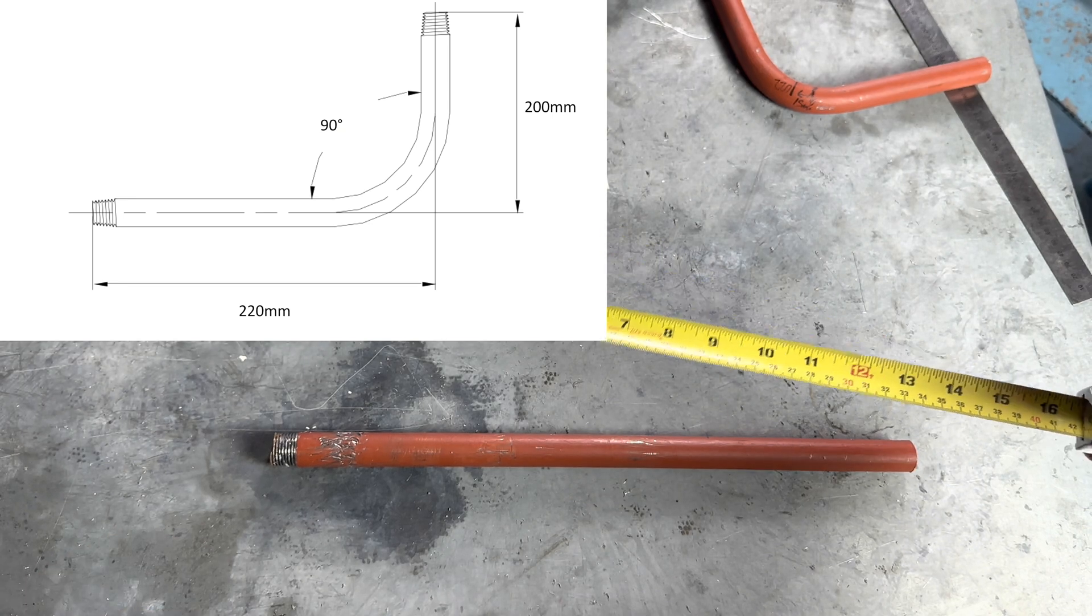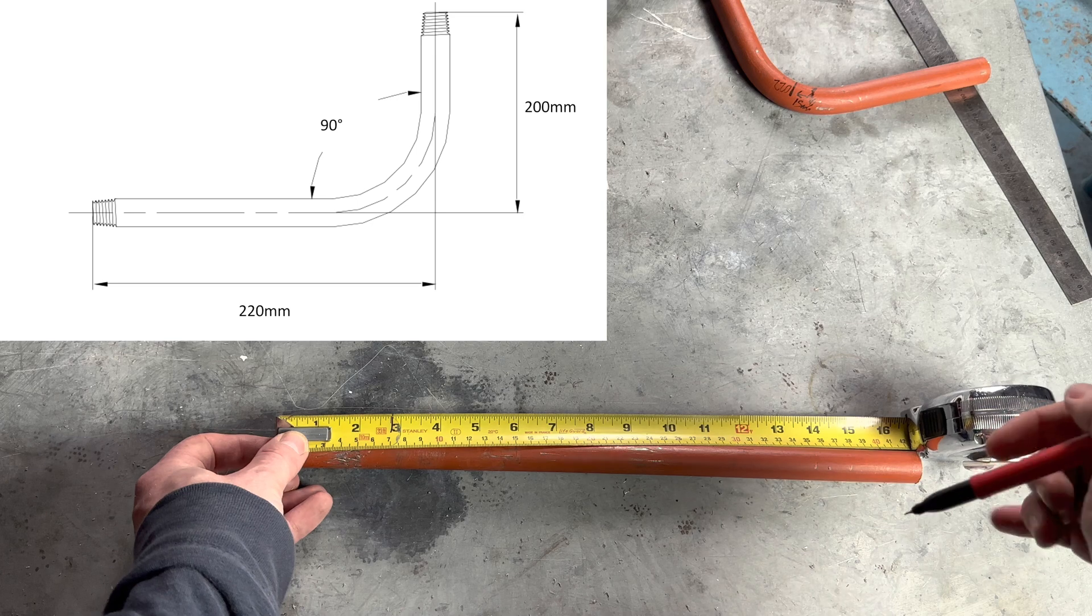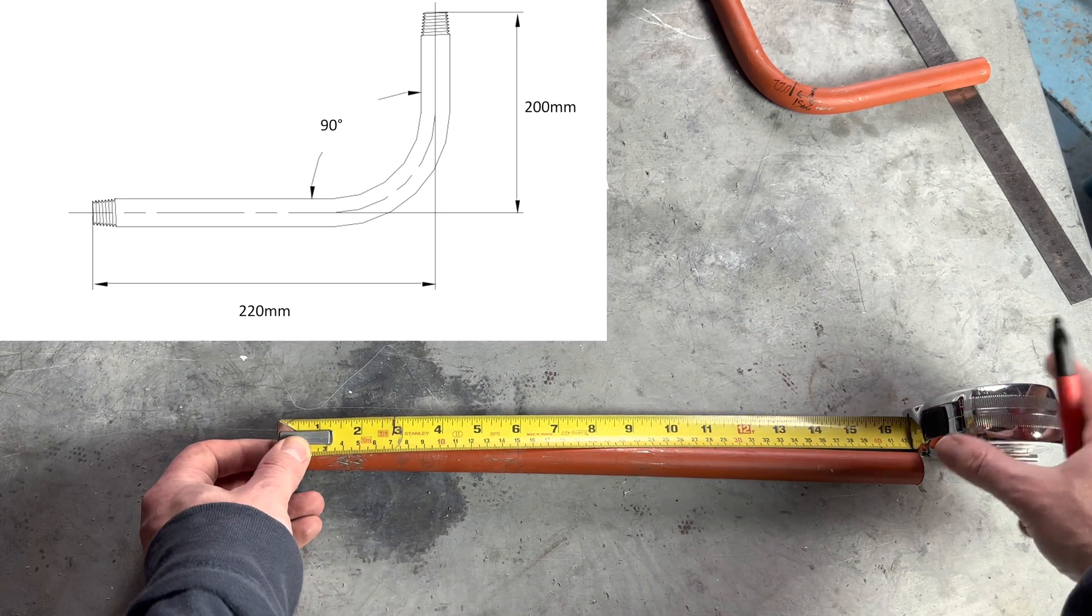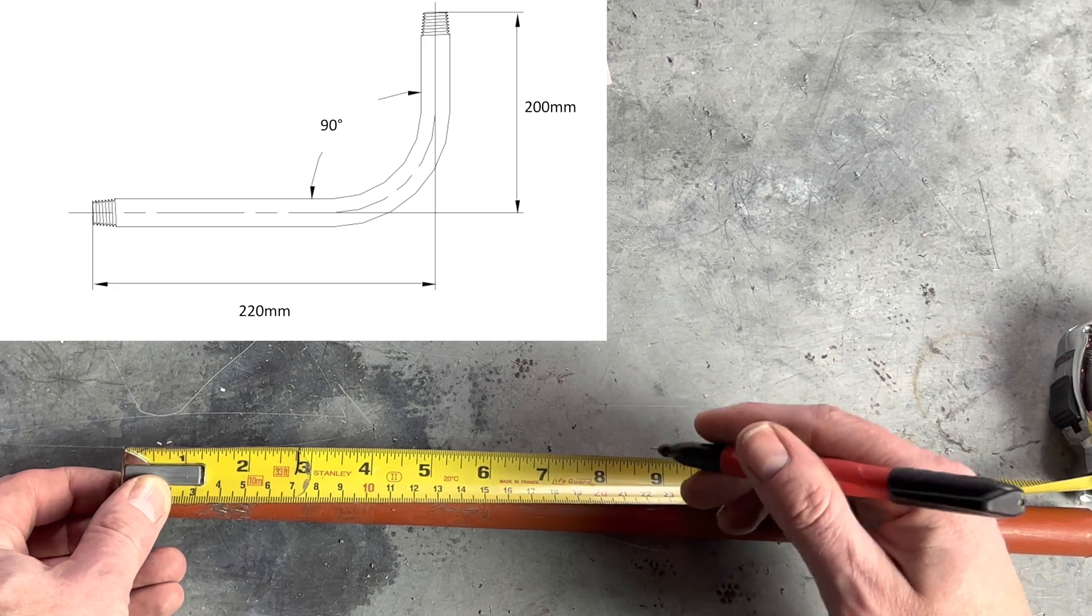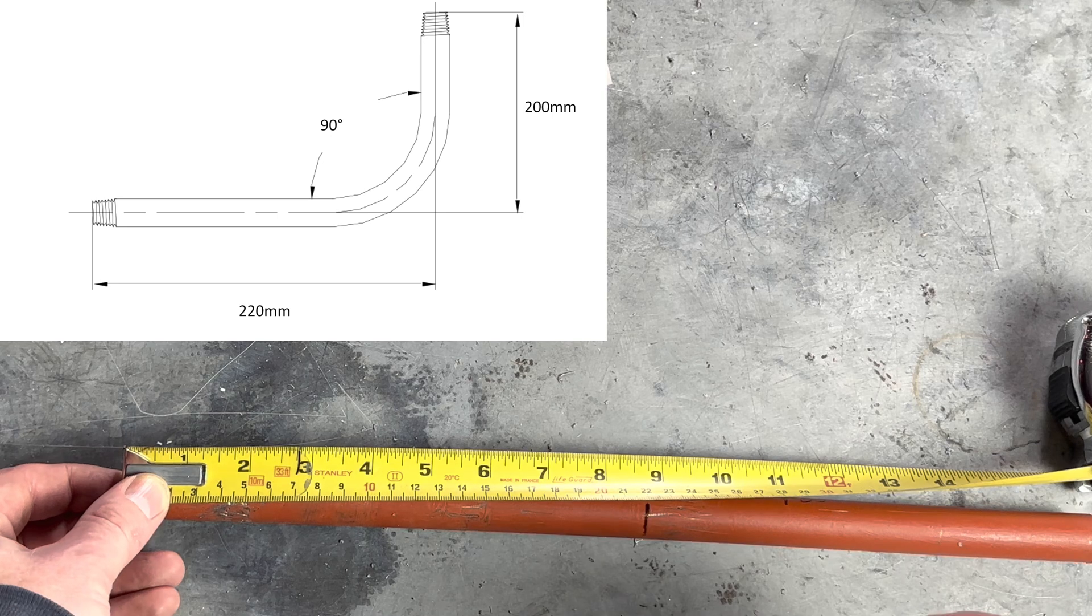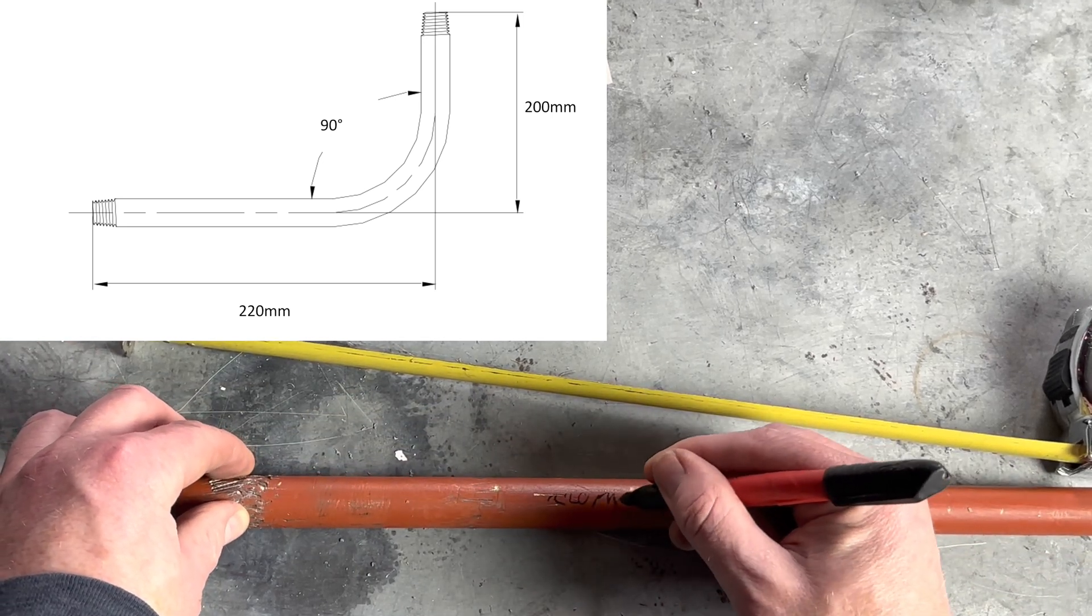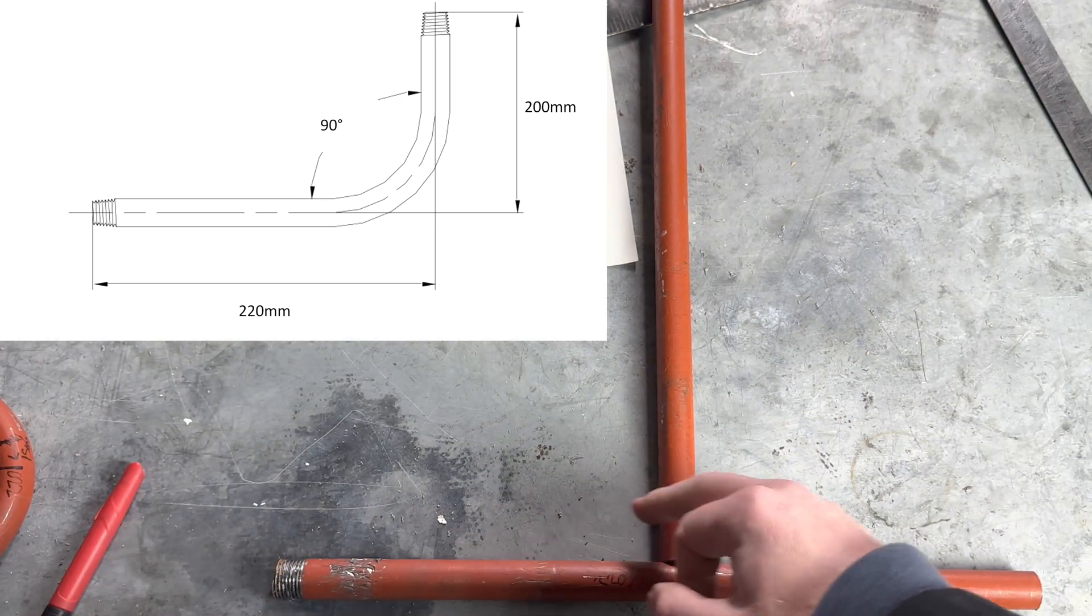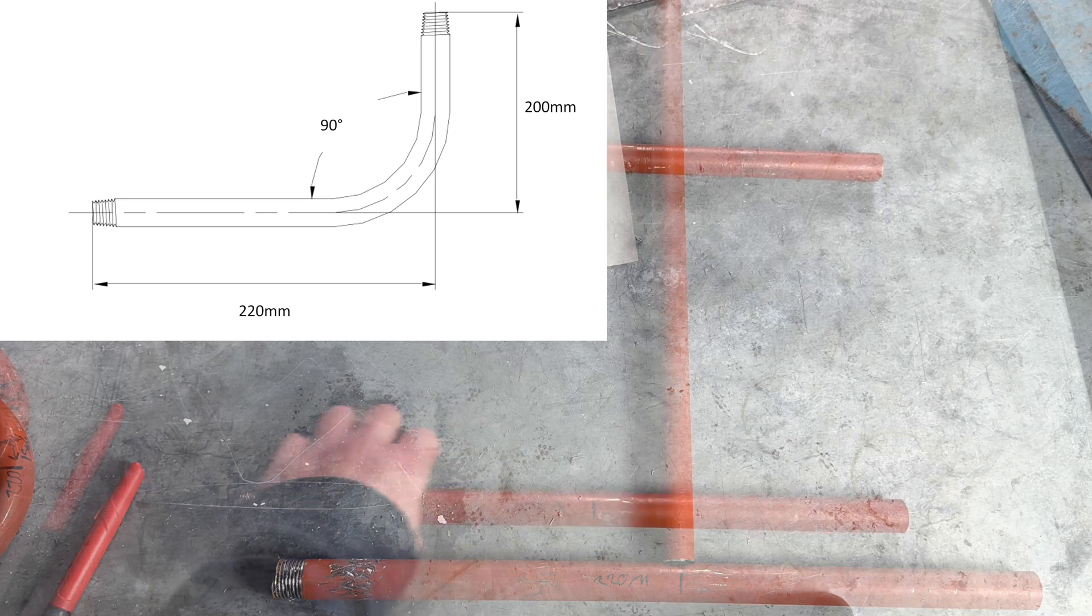I've cut a piece of pipe 420 millimeters long and we want 220 millimeters - we want the center of the pipe going this way to be 220. So we measure 220 millimeters and put a mark here. We want the center of the bend to be at the 220 mark, so we're going to bend it like this.